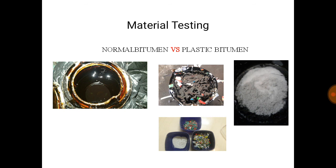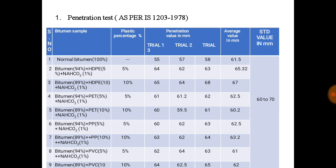This is our testing materials. This is the table of results. Penetration test results are as per IS 1203:1978. We use bitumen at 95%, high-density polyethylene at 5%, and sodium bicarbonate at 1% across all trials. We tested two plastic percentages — 5% and 10%. HDPE at 10% gives the best result among the other plastics.